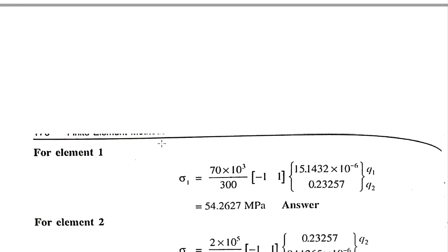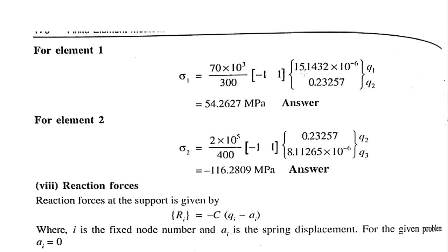Next, find the stress in each element. The stress formula is σ = (E/L) × [-1, 1] × {Q_i, Q_{i+1}}. For element 1 (aluminum), use Q1 and Q2; for element 2 (steel), use Q2 and Q3. Substituting the displacement values: σ1 = 54.26 MPa for the aluminum element and σ2 = -116.something MPa for the steel element.